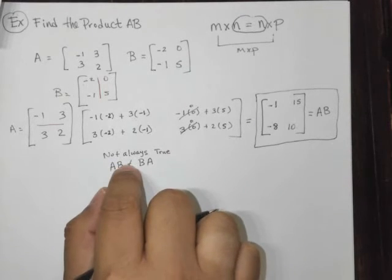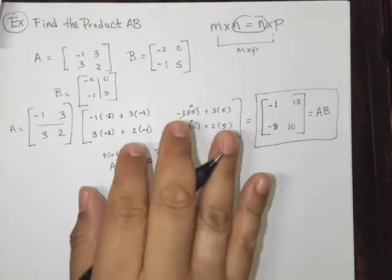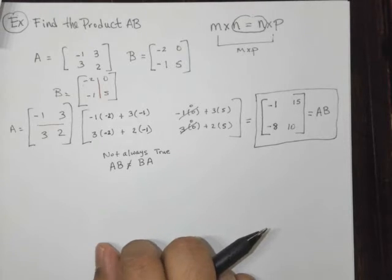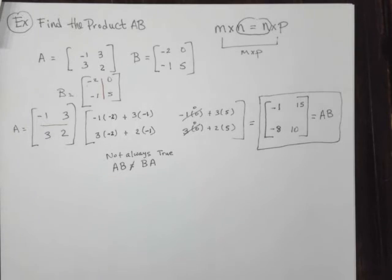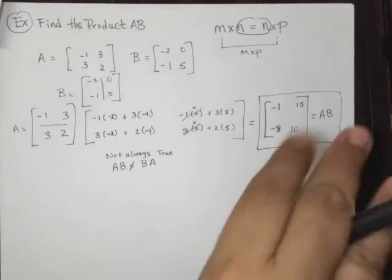So AB does not always equal BA. Be very careful with that. If you do it the other way around, you will probably get a different product. The only, one of the only ways I know, of course, you will get the same thing is if the two matrices are identical. So A and B would be the same matrix.